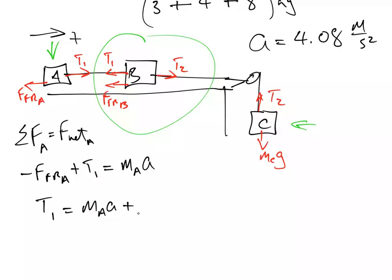Now, instead of writing force of friction, I'm going to write what it's equal to, which is μ mA g. And of course, we can factor out the mA and we get this.